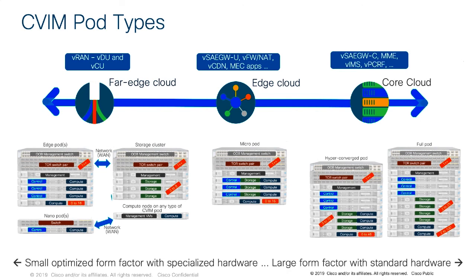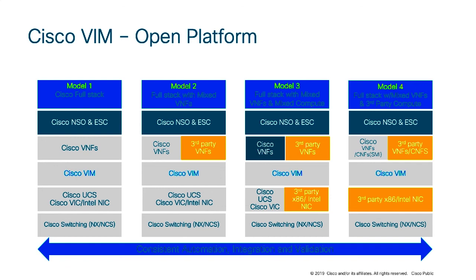The edge pod is an optimization of the micro pod, typically where virtual radio access network workloads appear. In an edge pod, the local storage component is removed and the compute nodes depend on a centralized storage cluster for image repositories — which is fine for virtualized network functions that don't need persistent storage and only require storage during boot to grab the instance image. The upcoming nano pod is essentially a telco cloud in a single server, providing a one-server form factor.